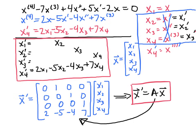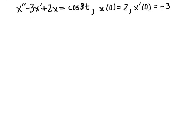Now let's look at a second order equation that includes initial conditions — an initial value problem. We do the same thing as before: solve for the highest derivative, x double prime. That equals negative 2x plus 3x prime plus cosine 3t, rearranging from smallest derivative to highest.